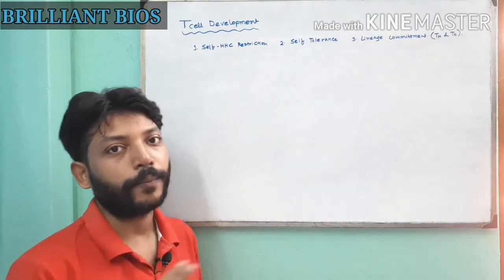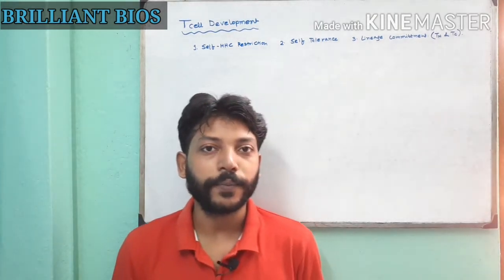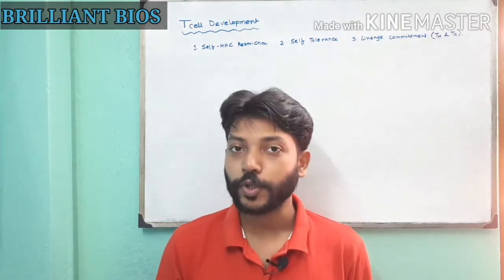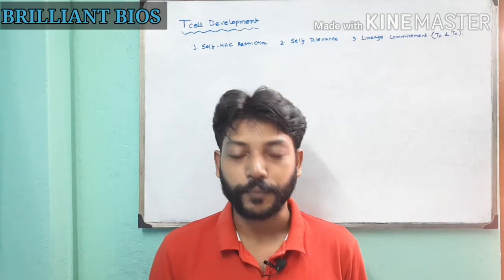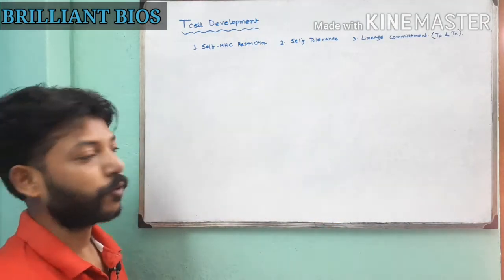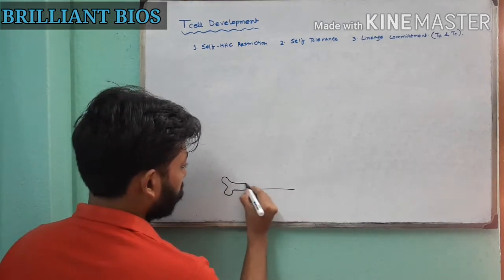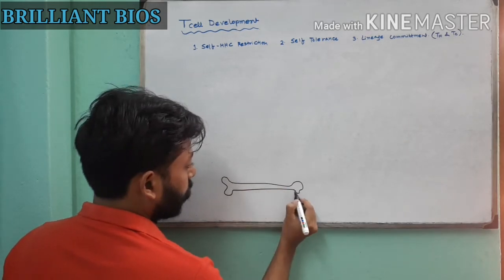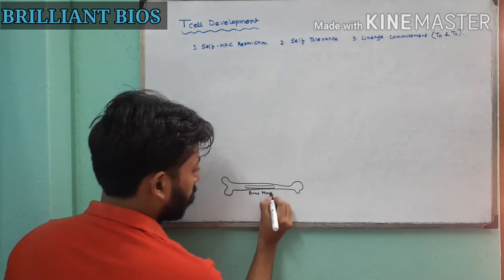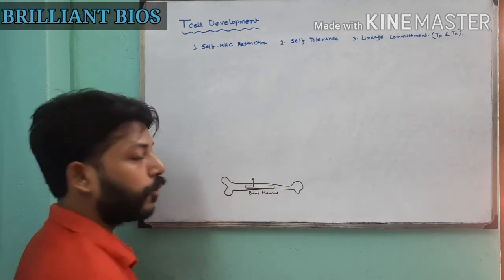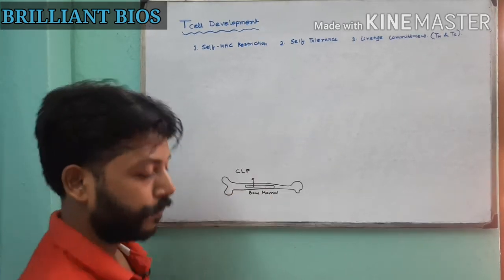The name T cell comes from thymus — T for thymus — but don't be confused that T cells are generated from the thymus. All immune cells are generated from the bone marrow, so T cell precursors also originate from the bone marrow. Let's draw a bone with bone marrow present inside it.